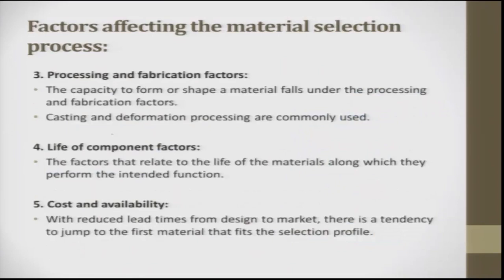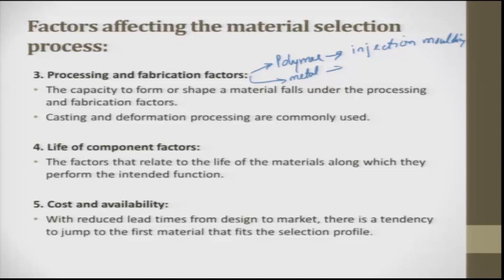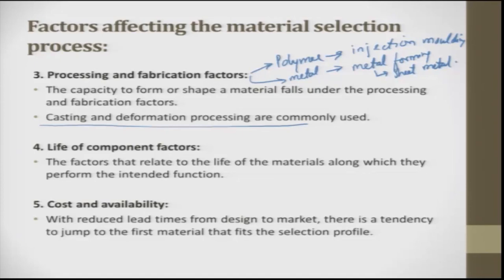Next is processing. If you want to produce any part economically, we look for polymer and a process called injection molding. The cycle time is enormously less — about 45 seconds to get 10 spoons made. For metals at an economical price, we go for metal forming using sheet metal. Casting and deformation are constant volume processes where the starting and ending material volume are almost the same. This process is not suited for mass production where product cost must be economical. Life of the component, cost, and availability are also very important factors.